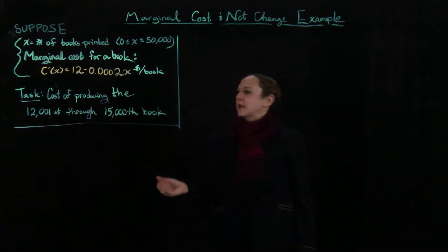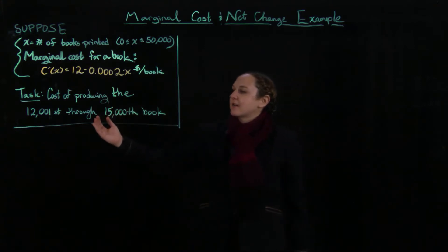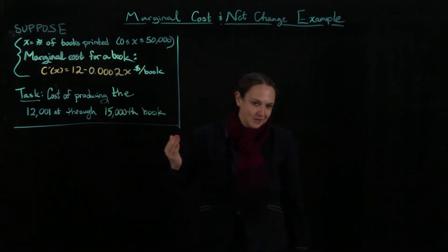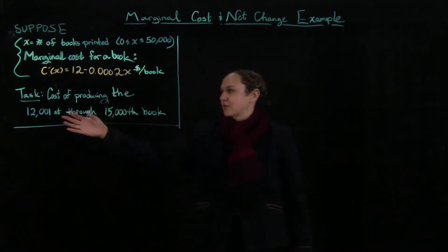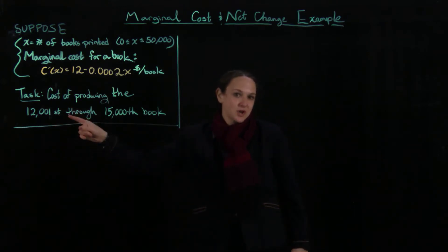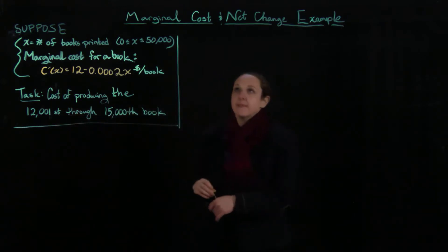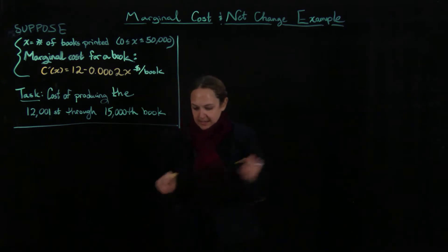And what we're going to end up doing is we're going to look at the cost of producing the first 15,000 and then subtracting off the cost of producing the first 12,000, because we're starting with the 12,000th first. So let's go ahead and do this.